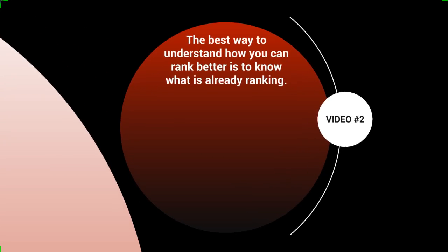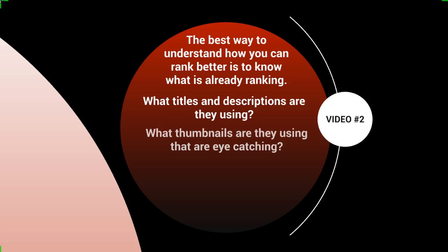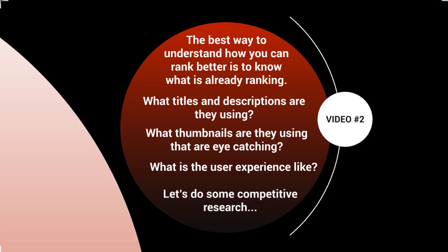The best way to understand how you can rank better is to know what is already ranking in your niche or market. We want to analyze the videos at the top, specifically looking at what titles and descriptions they're using, what thumbnails are eye-catching, and what the user experience is like when you click through those videos.